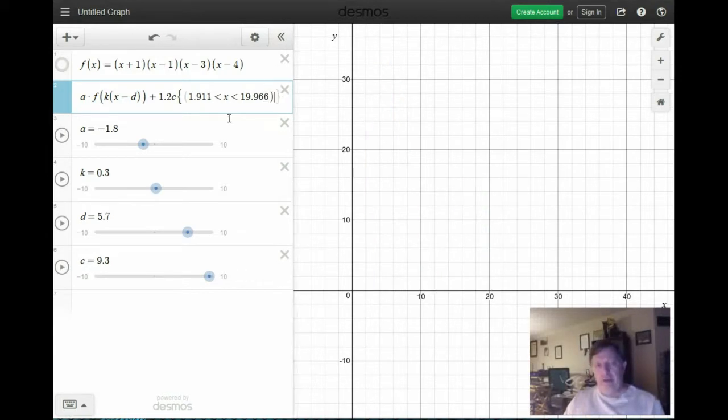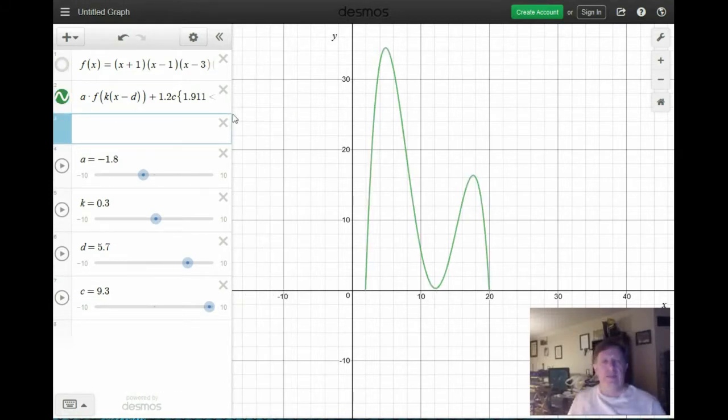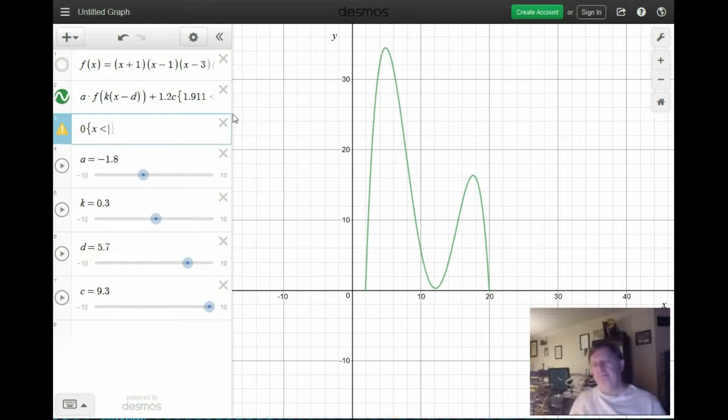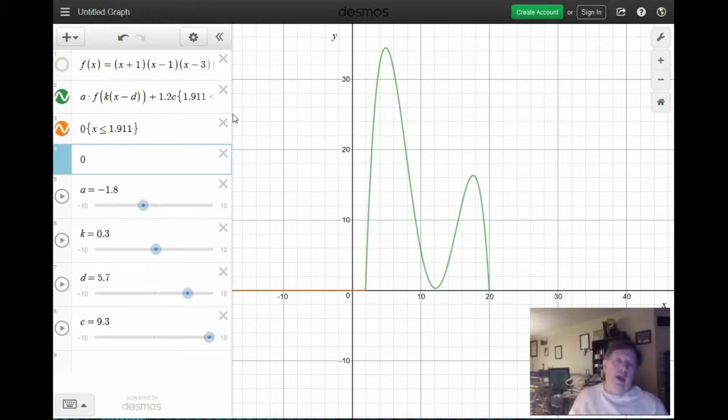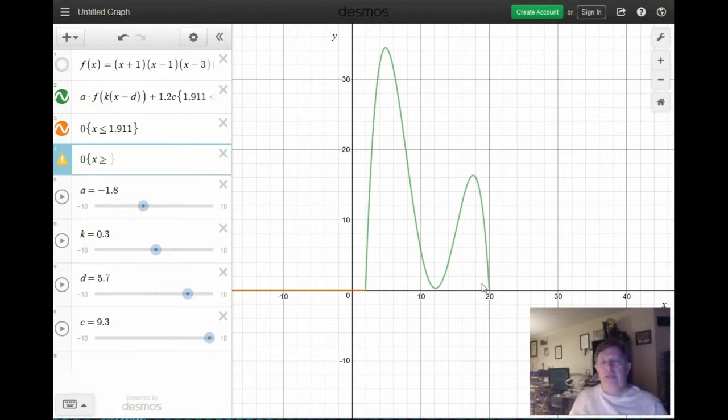Now we need to add another function. So all I'm going to add is a platform, which is just a flat line. f of x is 0 when x is less than 1.911 and when x is greater than or equal to 19.966.